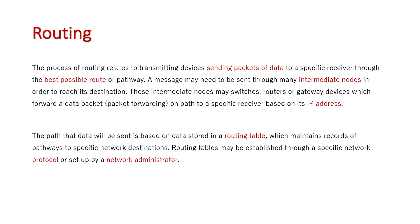A message may need to be sent through many intermediate nodes in order to reach its destination. The actual transmitter connected to a source is not likely going to send directly to the receiver of the destination — it has to follow a pathway of many intermediate nodes. That's what routing does: it finds the best possible pathway and sends the message down that line.